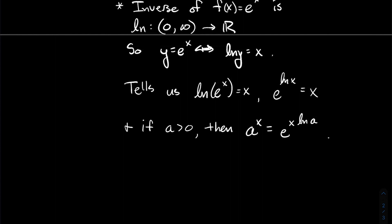If a is a positive real number, then a to the x — any exponential with some other base like 2 or 7 — can be rewritten with base e. That allowed us to take derivatives of things like 7^x using rules we know for e^x with the chain rule. Specifically, a^x is the same thing as e^(x · ln a).